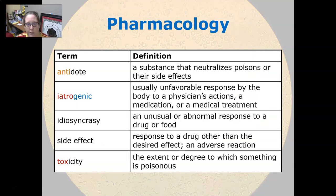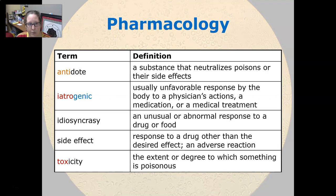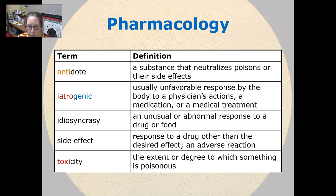Let's look at pharmacology for the urinary system. An antidote is a substance that neutralizes poisons or their side effects. Iatrogenic means caused by a procedure, the physician, or something that happened during treatment — usually an unfavorable response to a physician's actions, a medication, or a medical treatment. Idiosyncrasy is an unusual or abnormal response to a drug or food. A side effect is a response to a drug other than the desired effect — it is an adverse reaction. Toxicity is the extent or degree to which something is poisonous.